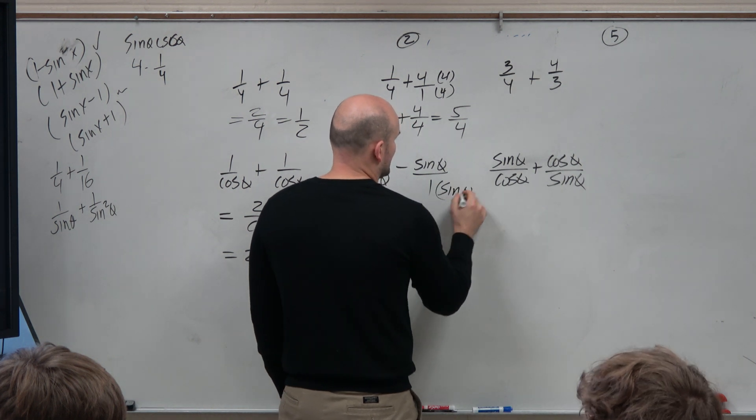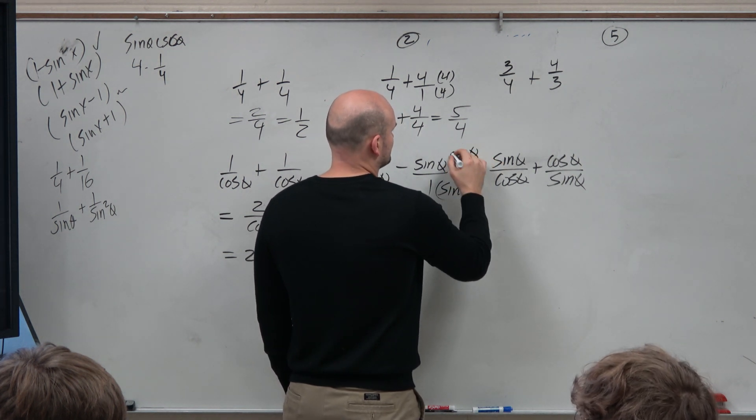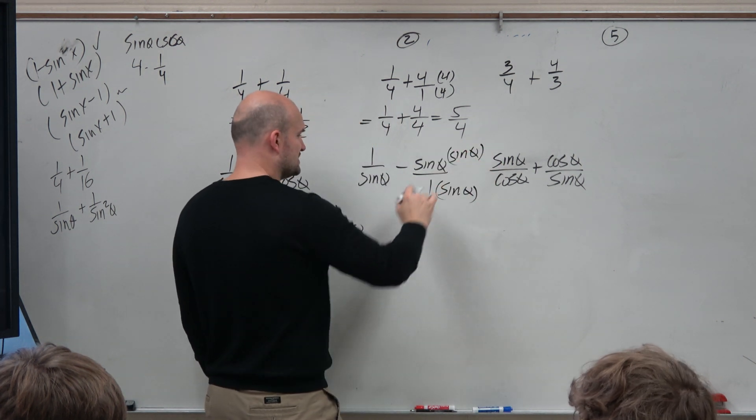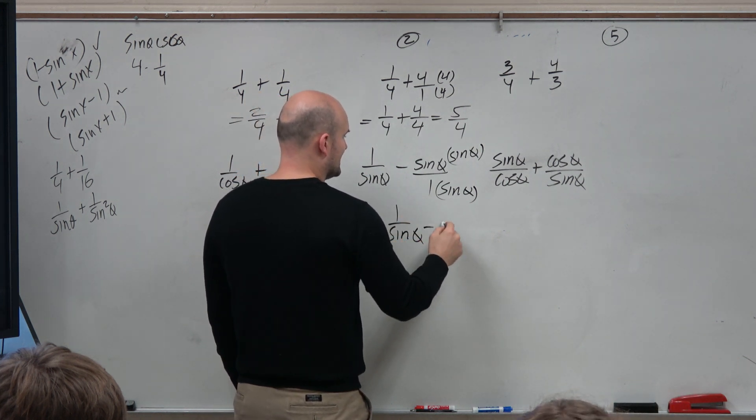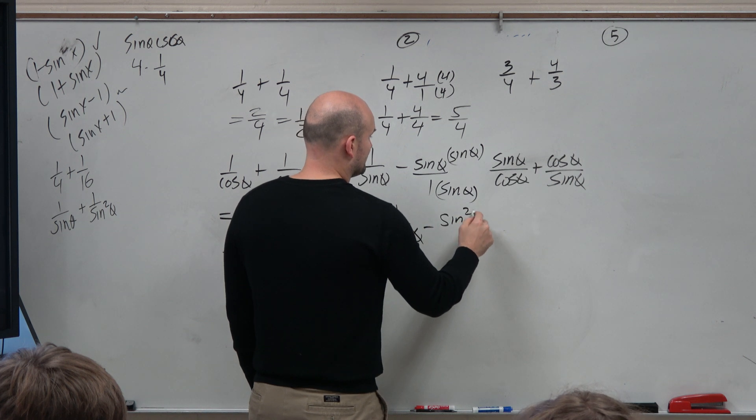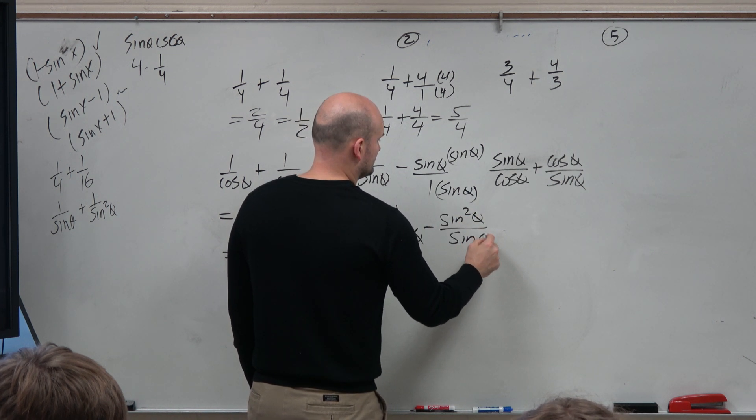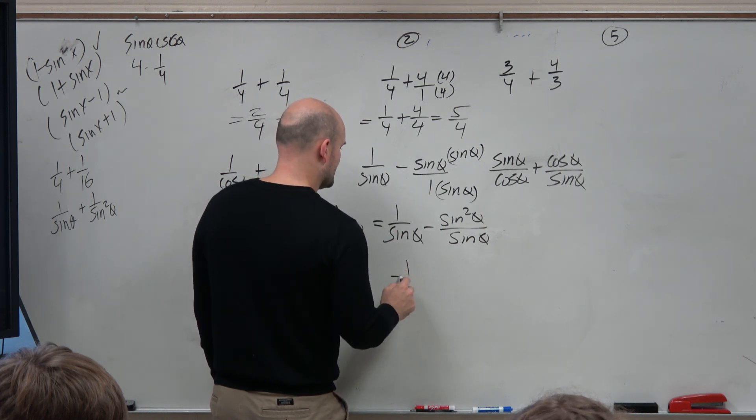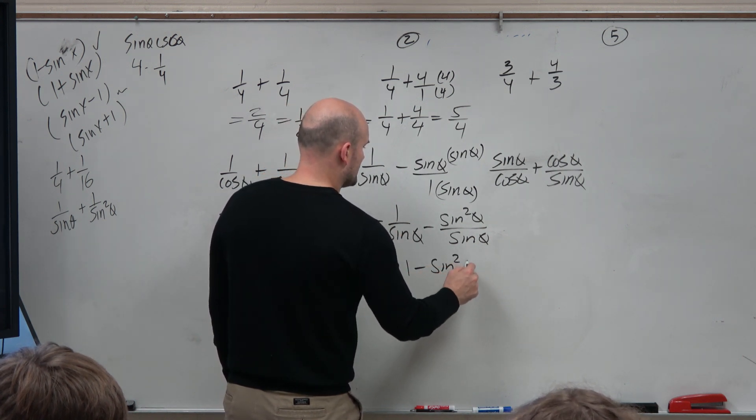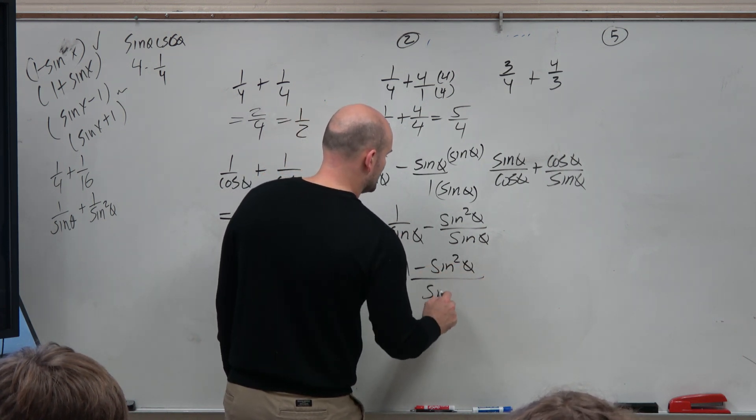So this becomes sine of theta times sine of theta. Again, we're only multiplying this fraction. So therefore, we're left with 1 over sine of theta minus sine squared of theta over sine of theta. Now they have the same denominator. So we can write this as 1 minus sine squared of theta all over sine of theta.